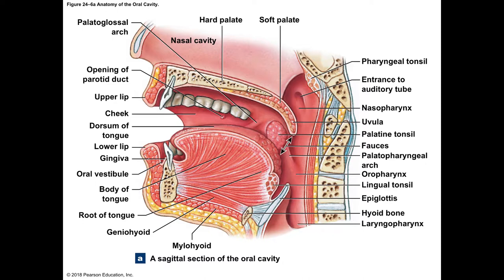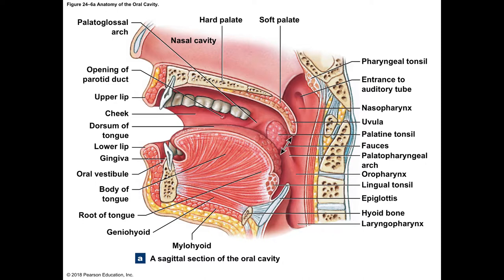Looking at the anterior view inside the mouth: here's the labium of the oral cavity, here's the uvula hanging down, here's the soft palate and the hard palate. You can also see the tonsils we talked about in the lymphatic system.